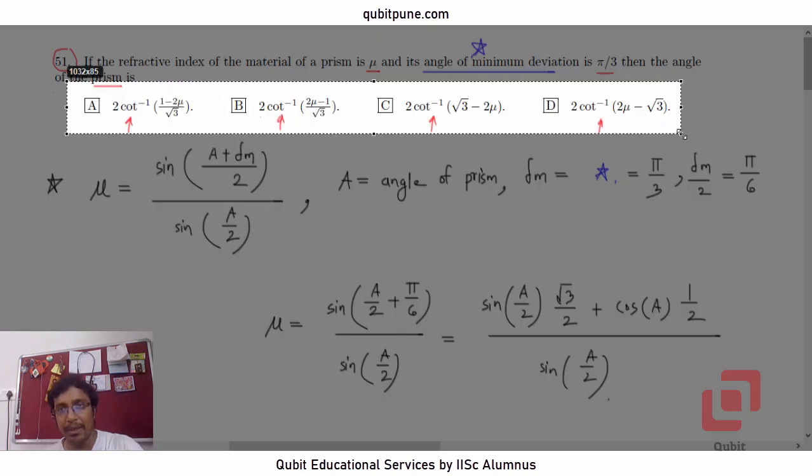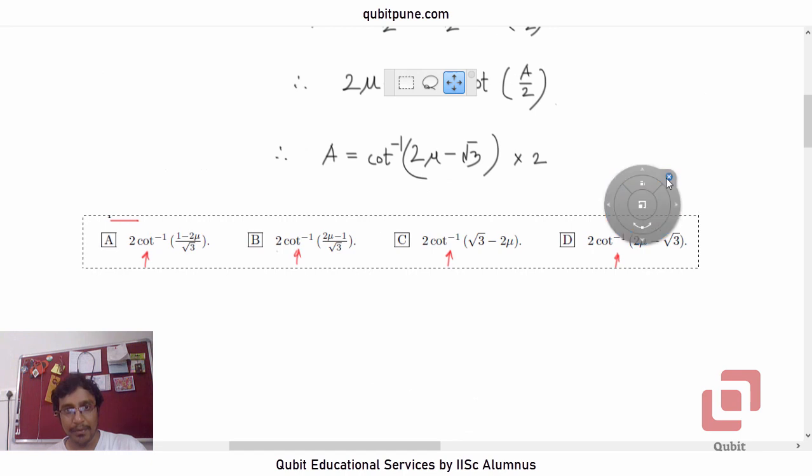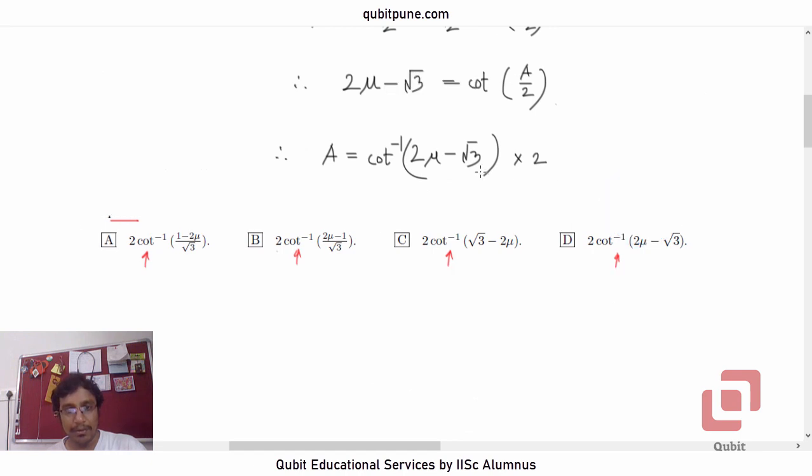Let us see which one of the given options matches with this. 2μ minus √3 into 2. Yes. So the correct option is option D: 2 cot inverse of 2μ minus √3.